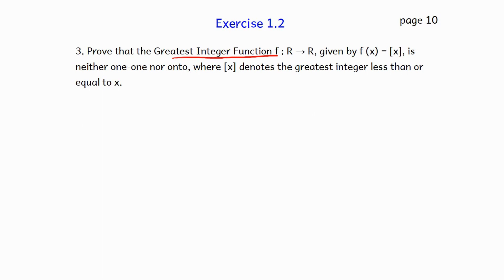Prove that the greatest integer function f, where domain and codomain are real numbers, given by f(x) = [x], is neither one-to-one nor onto, where [x] denotes the greatest integer less than or equal to x. We have seen this type of function in the introduction part. The greatest integer function is shown here.